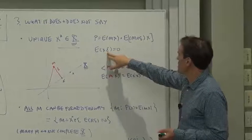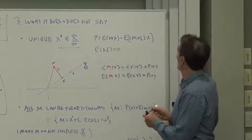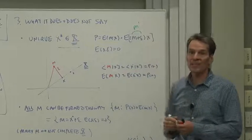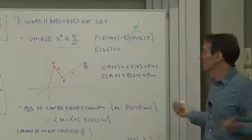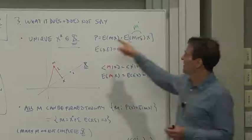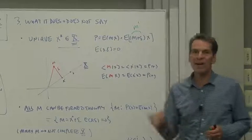If that noise is uncorrelated with the payoffs, then you get the same price out of a new discount factor formed as the old discount factor plus noise. So there will be many discount factors, and X star isn't the only one of them. X star is the unique one in X.